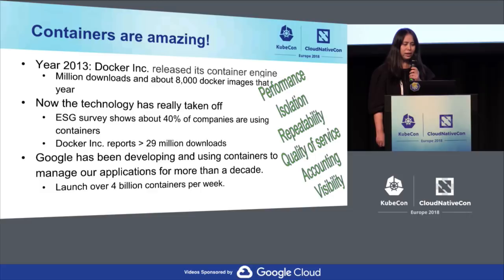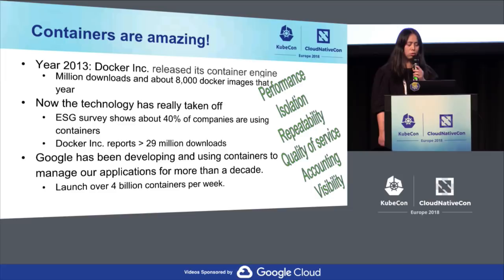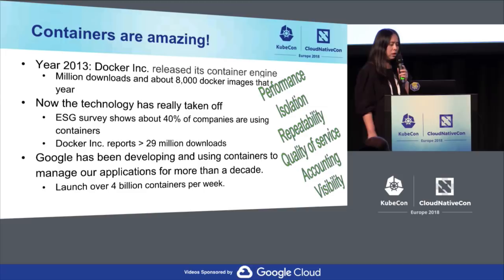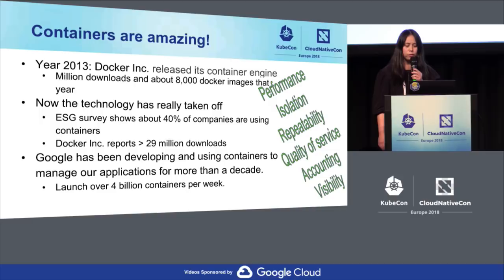In 2013, Docker released its container engine. That year there were millions of downloads and about 8,000 Docker images pushed to the registry. Now the technology has really taken off. A recent container security survey by the Enterprise Strategy Group shows about 40% of companies are using containers in some way, and Docker reports over 29 million downloads. At Google, we've been developing container technology for more than a decade, launching over 4 billion containers every week.